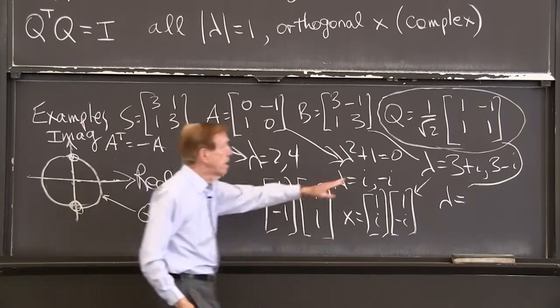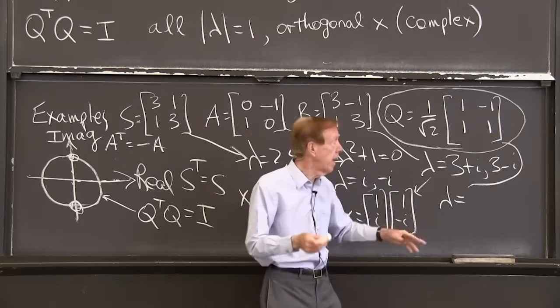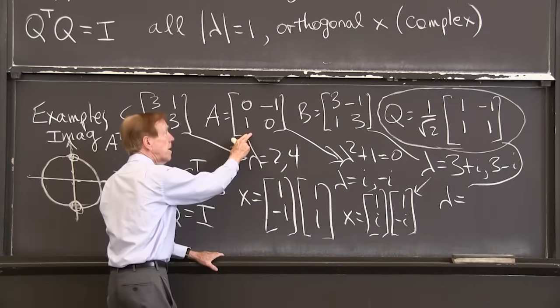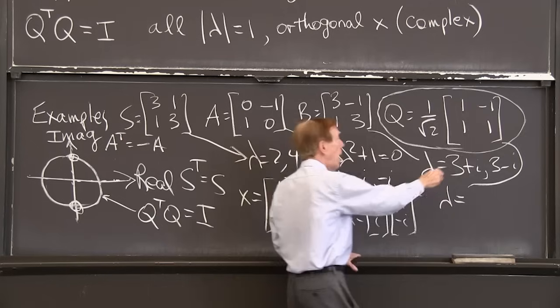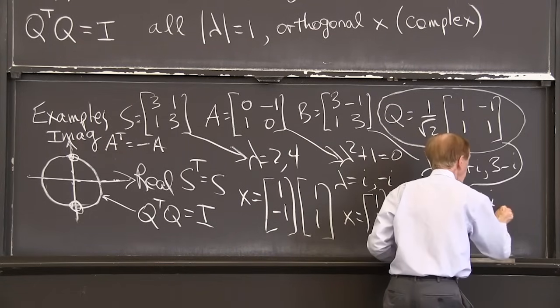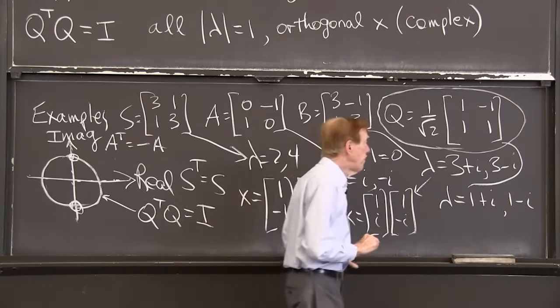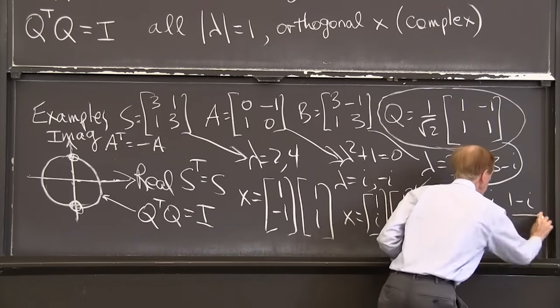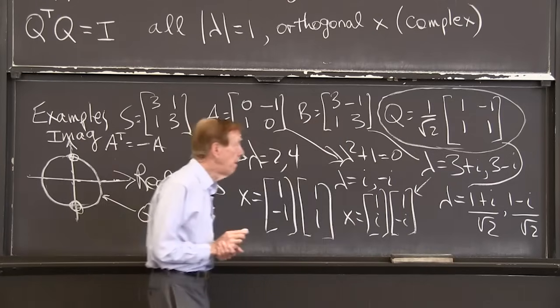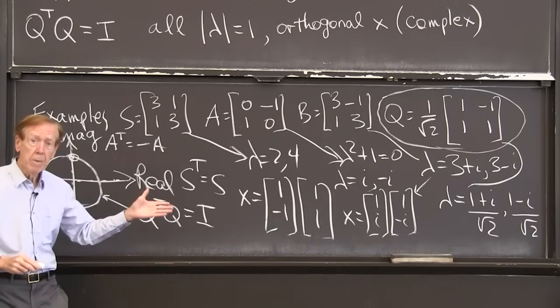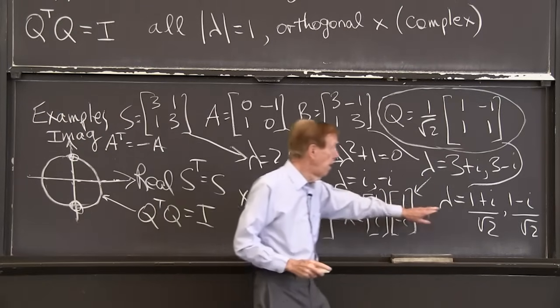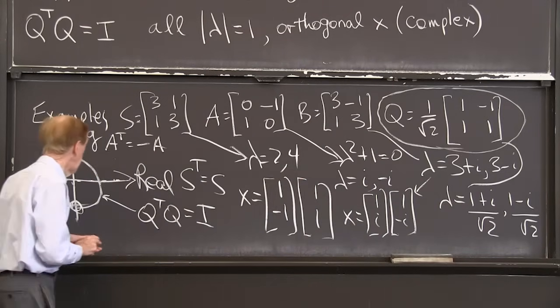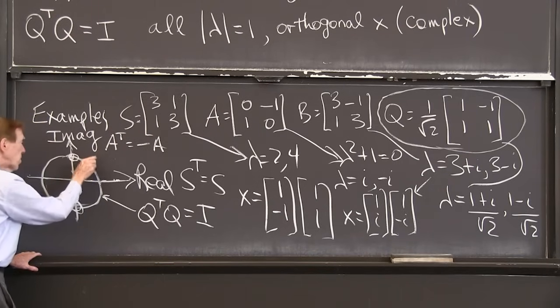I can see here I've added 1 times the identity, just added the identity to minus 1, 1. So again, I have this minus 1, 1 plus the identity. So I would have 1 plus i and 1 minus i from the matrix. And now I've got a division by square root of 2.